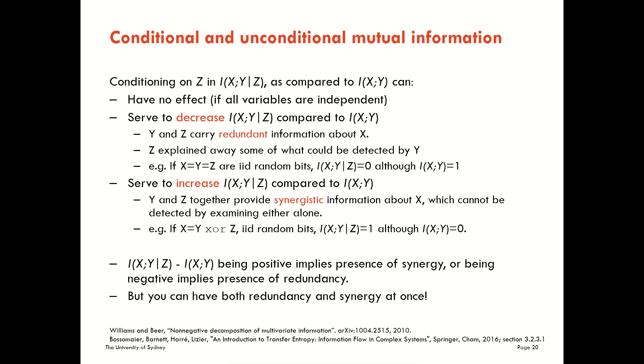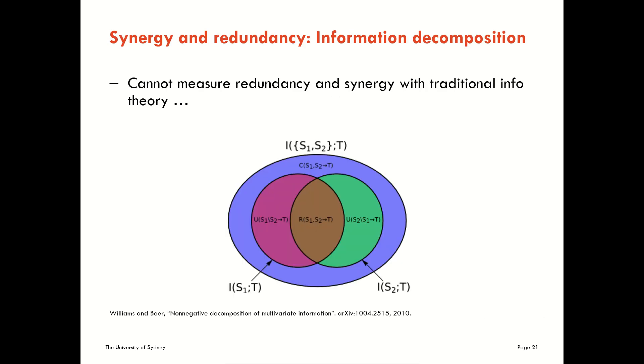That's just an implication, though. Importantly, we want to think about the possibility that we could have both redundancy and synergy at once. They could both actually be present, even though taking a net of these terms may only imply the presence of one or the other. This has led to a very active area in contemporary information theory known as information decomposition or partial information decomposition. The reason this area has been so active is because we can't measure redundancy and synergy with traditional measures from information theory.